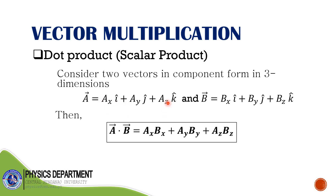Next, for two vectors in component form in three dimensions, vector a = ax·î + ay·ĵ + az·k̂ and vector b = bx·î + by·ĵ + bz·k̂. Then a · b equals ax·bx + ay·by + az·bz. Note these are just numbers, so the result is a scalar quantity — that is why the dot product is also called the scalar product.